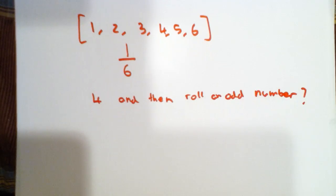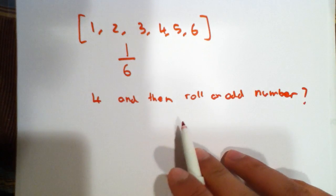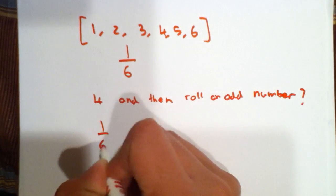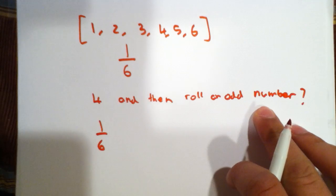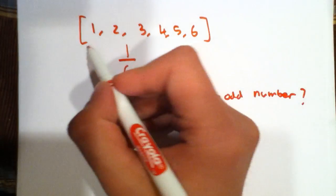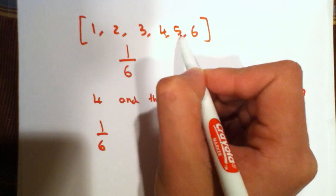So we know that for the first part, 1 sixth is the probability if we roll a 4. Now what about rolling an odd number? An odd number in this set would be 1, 3, and 5.